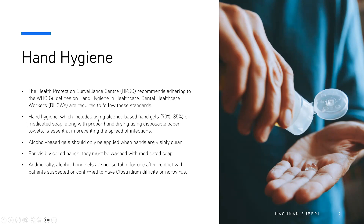Hand hygiene, which includes using alcohol-based hand gels — that is 70% to 85% — or medicated soap, along with proper hand drying using disposable paper towels, is essential in preventing the spread of infections. Alcohol-based gels should only be applied when hands are visibly clean. If they are visibly dirty or soiled, it is always mandatory to use soap and water. You can use medicated soap for that purpose.